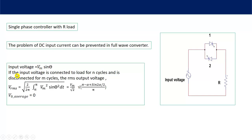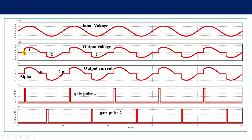The line input voltage is Vm sin(θ). During the positive half cycle at alpha, thyristor 1 is triggered and the output voltage follows the input voltage. Then from pi to pi plus alpha, the voltage is zero because thyristor 1 is off and thyristor 2 is not yet triggered. Thyristor 2 is triggered at pi plus alpha, so from pi plus alpha to 2π the output follows the input voltage. Then from 2π to 2π plus alpha, both thyristors are off and voltage is zero. At 2π plus alpha, thyristor 1 is triggered again and the pattern repeats.